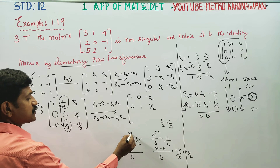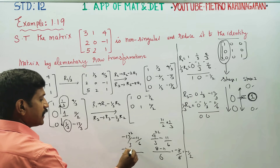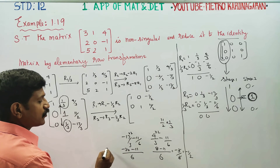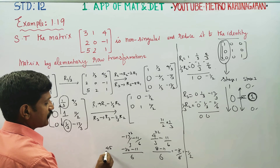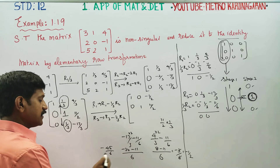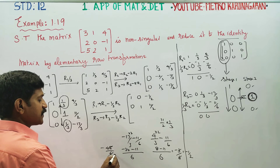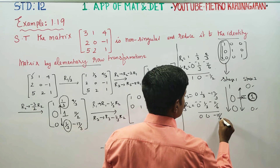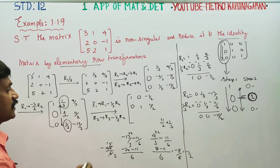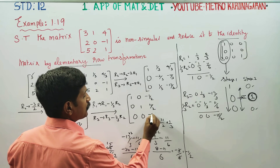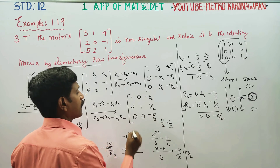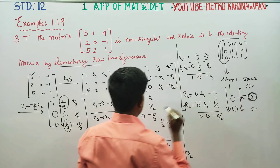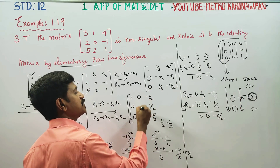So R3 becomes: 0, 0, minus 15/2. The current matrix is now: Row 1: 1, 0, minus 1/2; Row 2: 0, 1, 11/2 (with a 0 appended); Row 3: 0, 0, minus 15/2. Stage 1 pivot is ready, Stage 2 pivot is ready.